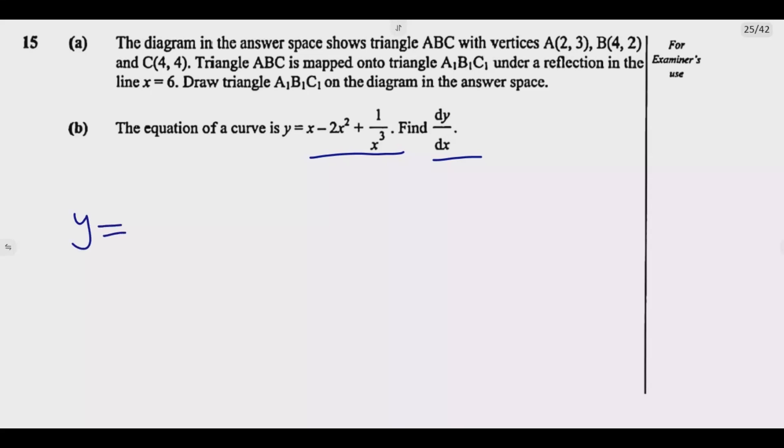So Y equals, this one can be written as X to the power 1 minus 2X squared, then plus. Then this can be written as, the principle that we know that a to the power negative n is the same as 1 over a to the power n.